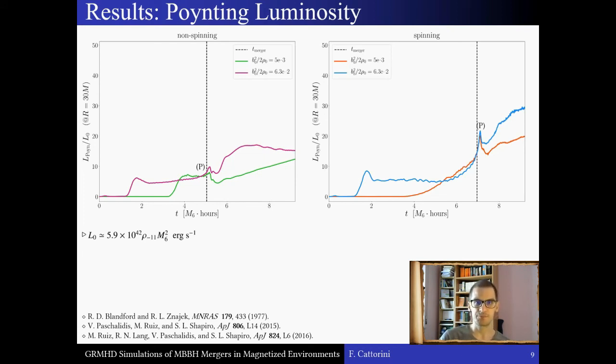In these figures, we see the Poynting luminosity extracted at a radius of 30M. In both cases, the magnitude of the local maximum reached after coalescence, which I marked with a P in the plots, does not depend on the initial magnetization of the plasma, but increases by approximately a factor of 2 in the 0.6 spinning cases.